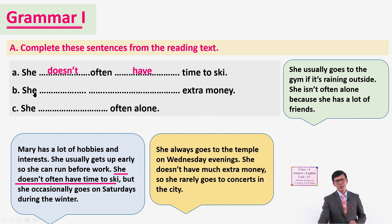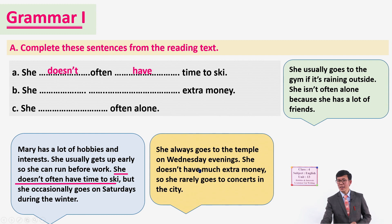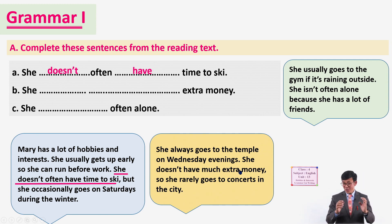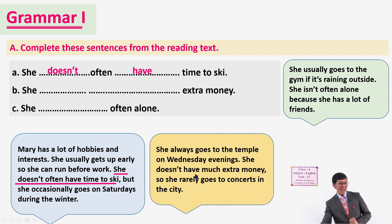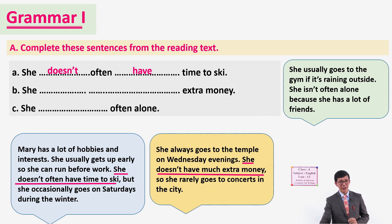Now look at B - 'extra money' is what's missing. Let's read: 'Aloys goes to the temple on Wednesday evening. She doesn't have much extra money.' Did you find it? She doesn't have much extra money - that is the missing information for sentence B. Very good, you noticed the missing information in the text.